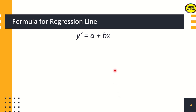The slope b is called the regression coefficient, or the rate of change of y per unit change in x. The line that describes the statistical relationship between x and y is called the regression line — a straight line that attempts to predict the relationship between points, also known as the line of best fit. The regression line gives an estimate of the mean value of y, denoted by y', given the value of x.